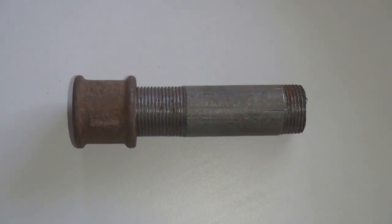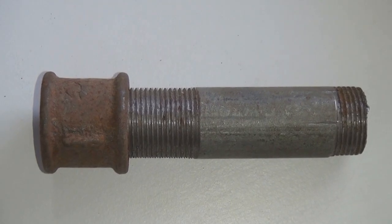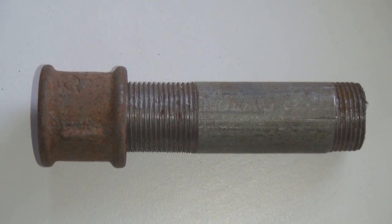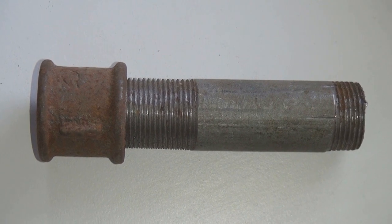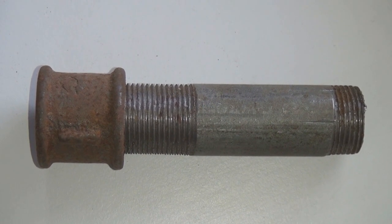Take a look at this example where two dissimilar metals have been in contact with each other for a couple of months. One part has clearly corroded and at some point it no longer serves its purpose.